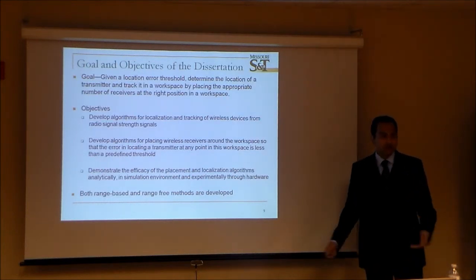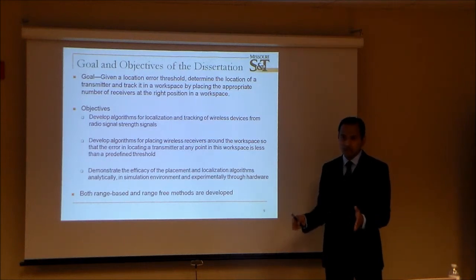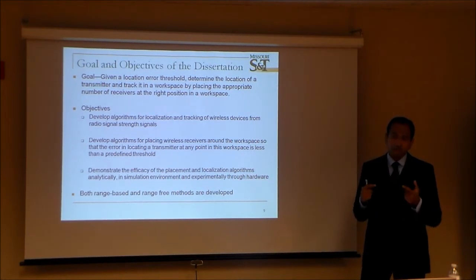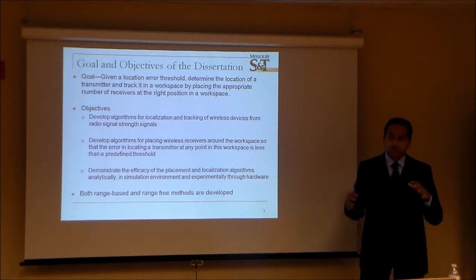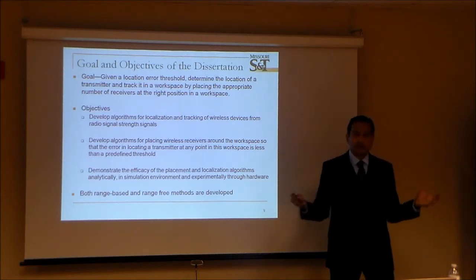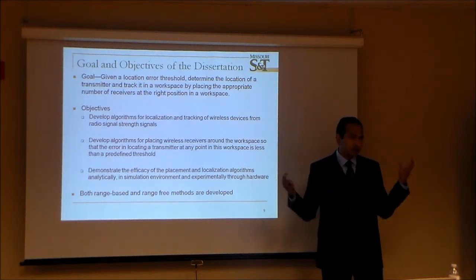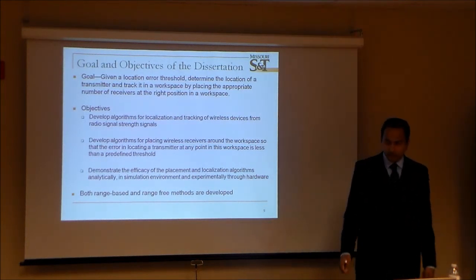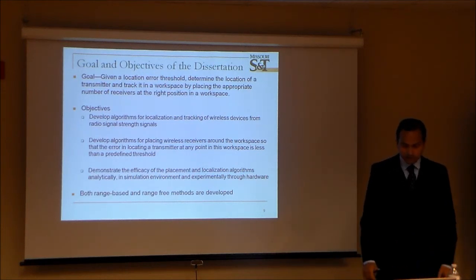The main goal of my dissertation was to develop a method to localize a transmitter from measured signal strength, and secondly, to find a method for placing receivers in the localization area so that I can provide guarantees on the transmitter location — mean, median, or 90th percentile accuracy guarantees.